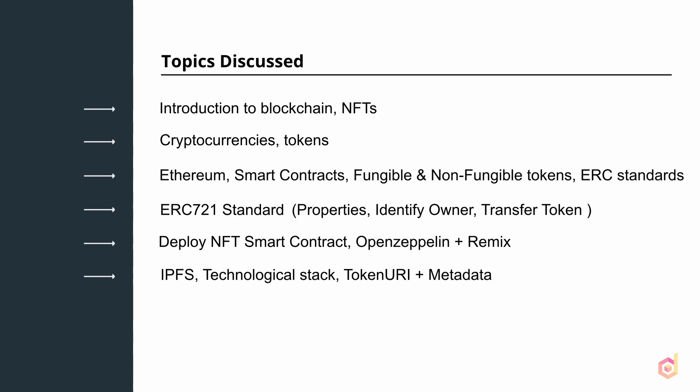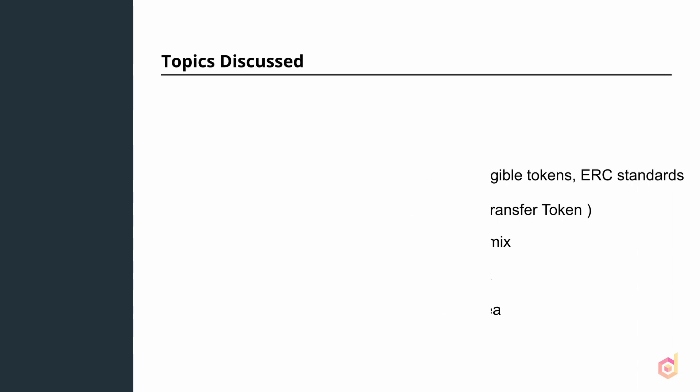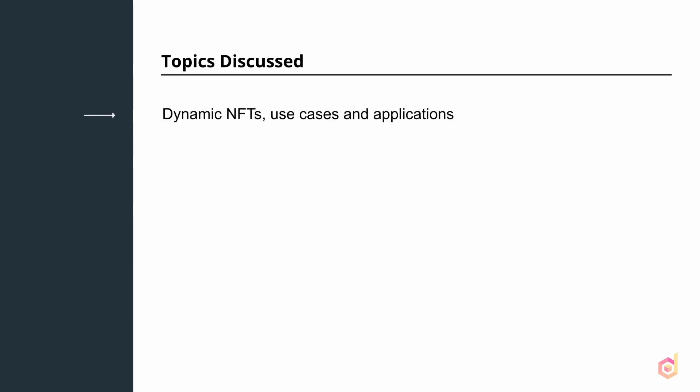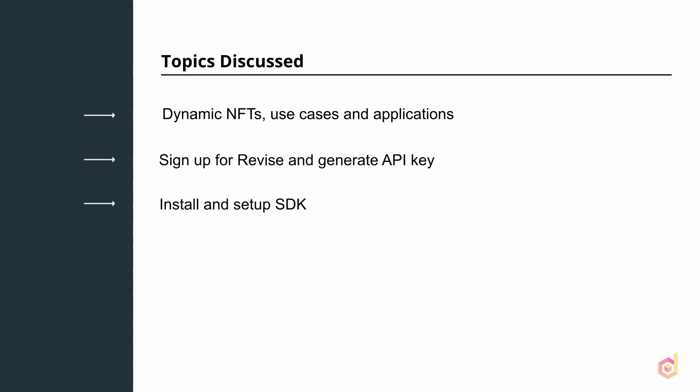Once we learn this, we can deploy our own token having all these things covered. We can also load the deployed NFT tokens on the OpenSea development network to test them. Now that we have learned everything about static NFTs, we can go for the dynamic NFTs. We will see dynamic NFTs in detail with their use cases and real-world applications. Then we will sign up for Revise and install and set up the Revise software development kit. Once done, we will go through the functions provided in the Revise SDK and build our own dynamic NFT token.